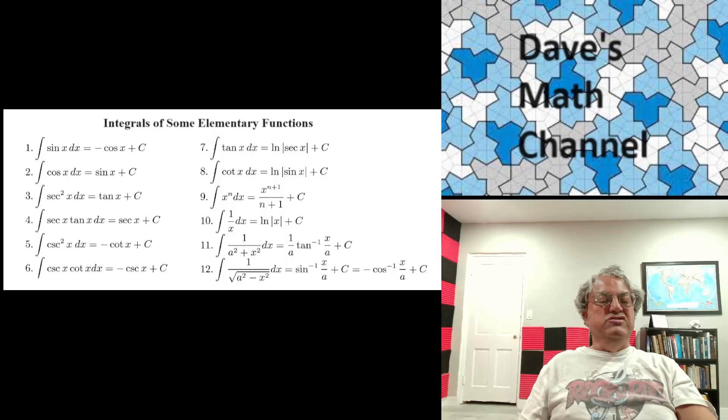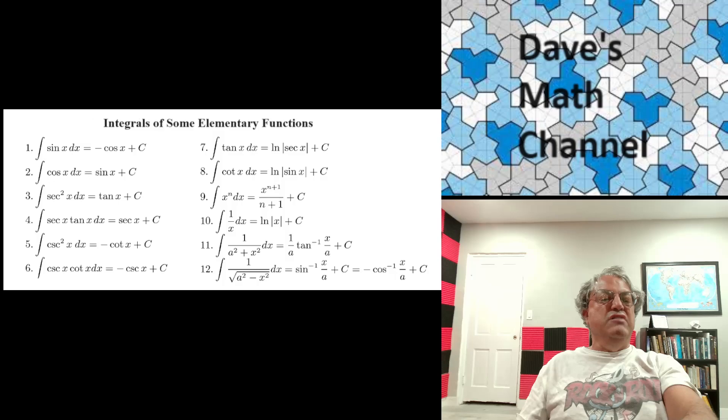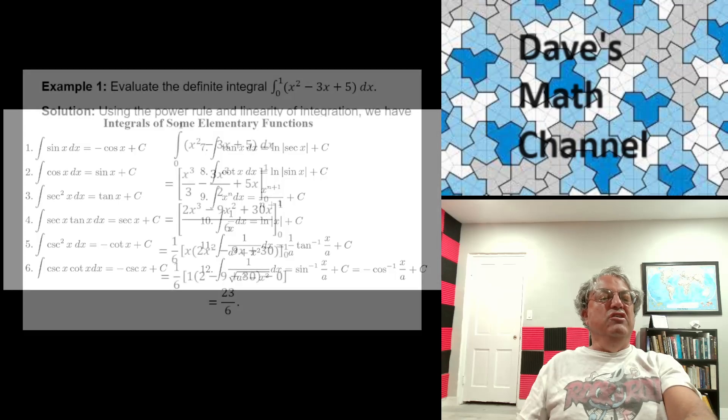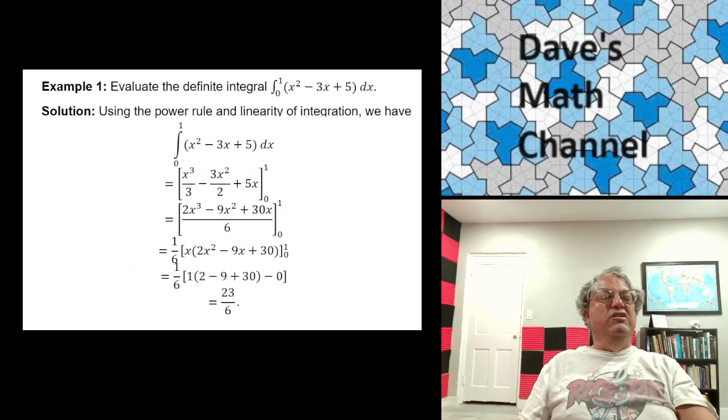But anyway, these are 12 common integrals you'll see a lot. And let's just go through some examples. So, for example one, here we're asked to evaluate a definite integral and we're given a polynomial x squared minus 3x plus 5. And we're asked to integrate that from 0 to 1.